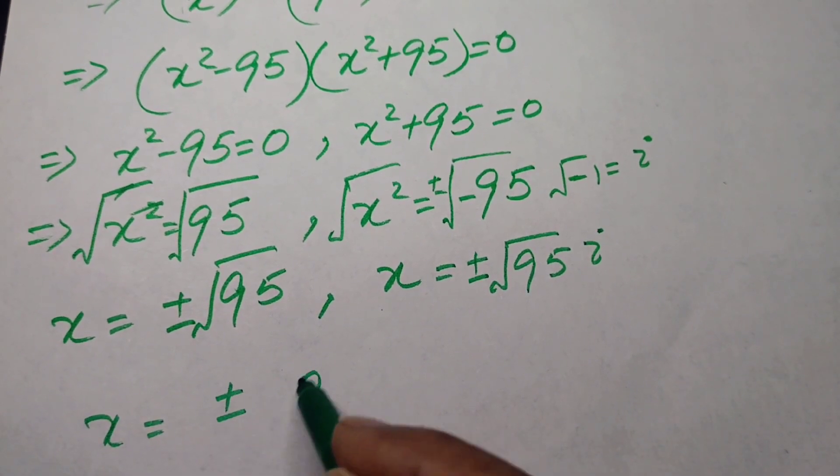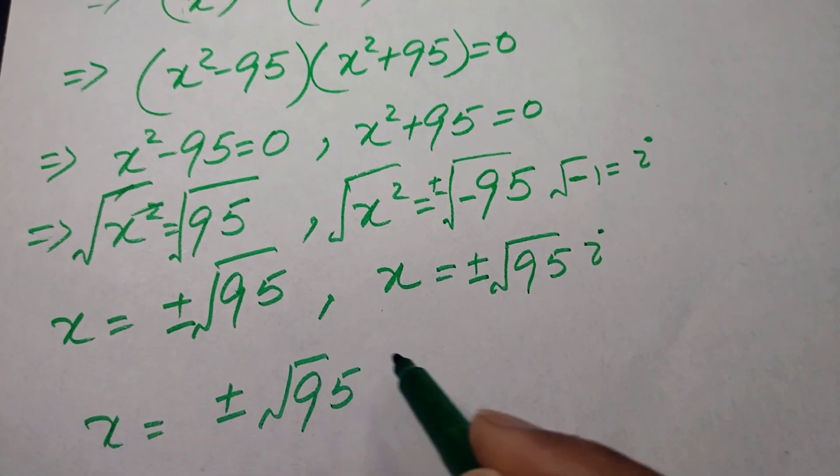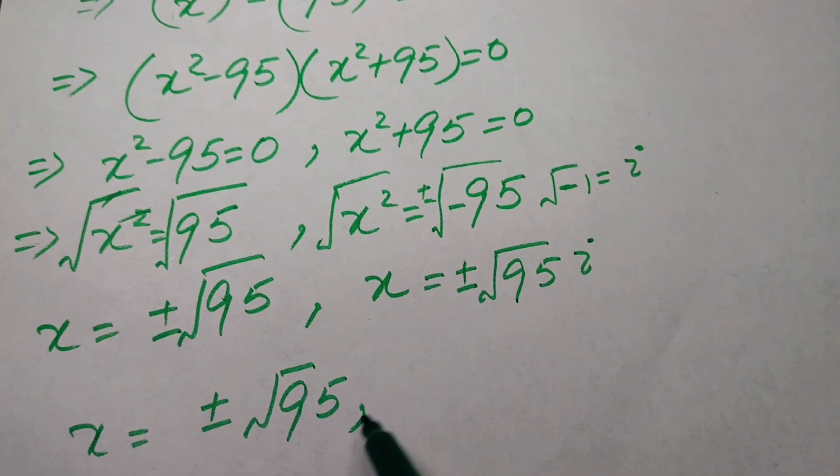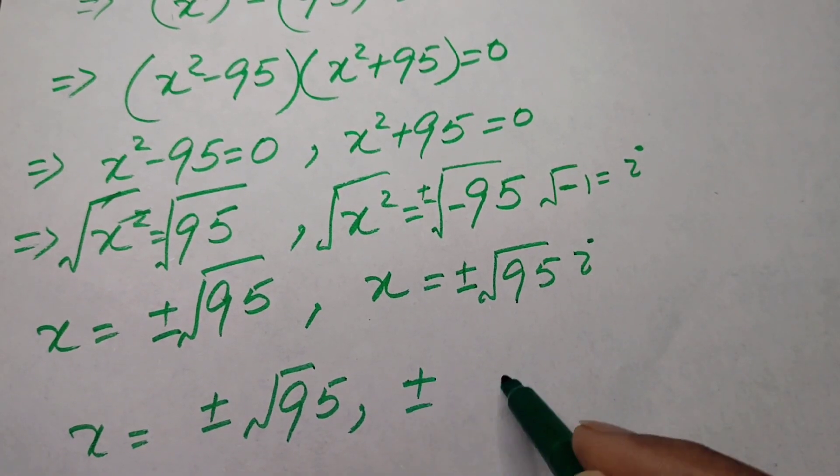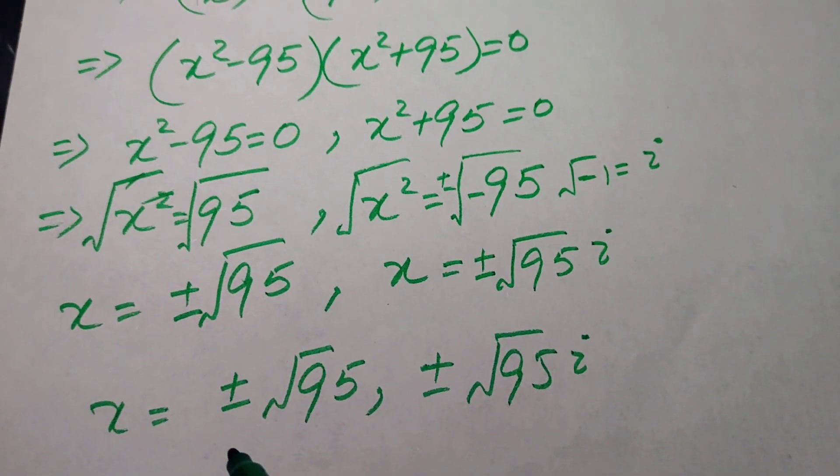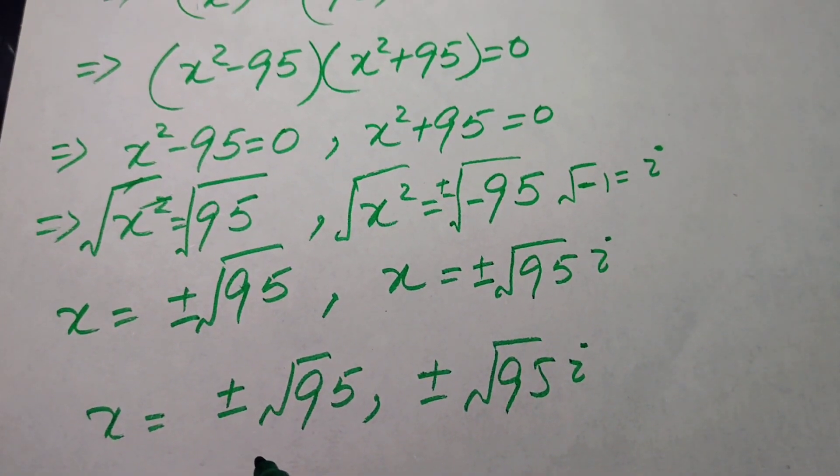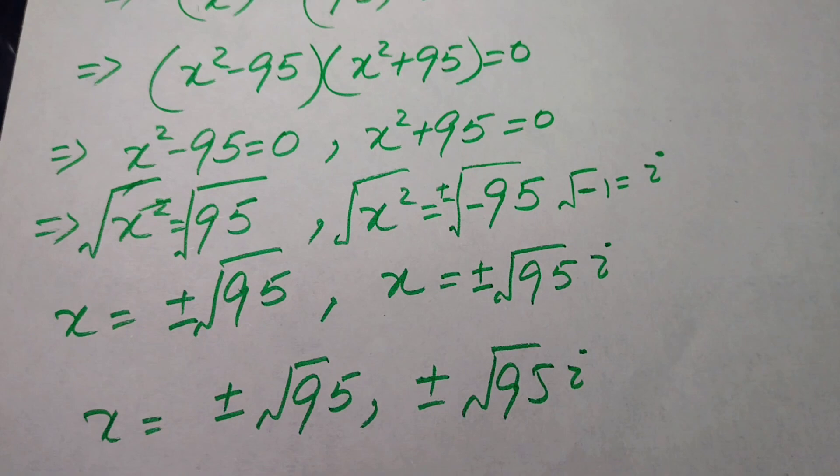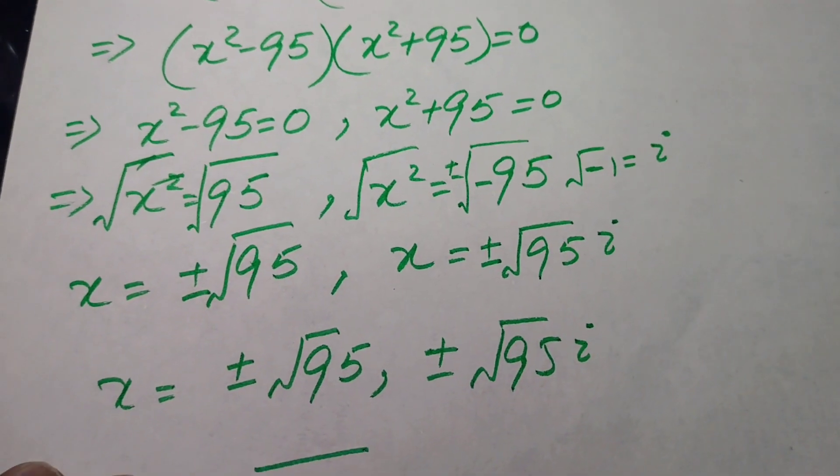Finally we will obtain the four roots of the given expression which is plus minus square root of 95 and plus minus square root of 95 iota. Here we see that two roots are real and two roots are complex. This is our final value of x.